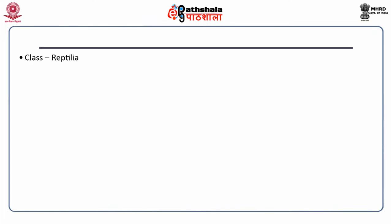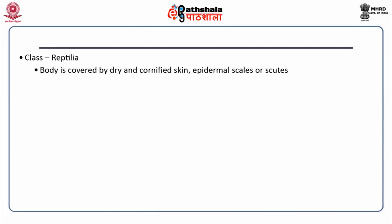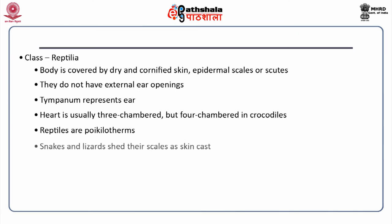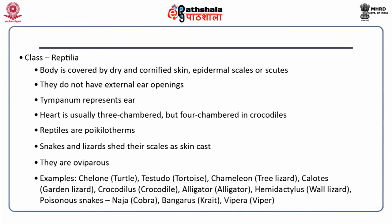Class reptilia includes animals where the body is covered by dry and cornified skin with epidermal scales or scutes. They do not have external ear openings; a tympanum represents the ear. The heart is usually three-chambered but four-chambered in crocodiles. Reptiles are mostly poikilotherms. Snakes and lizards shed their scales as skin cast. They are oviparous. Examples include chelone, testudo, chameleon, calotes, crocodilus, alligator, hemidactylus, and poisonous snakes including naja, bungarus and vipera.